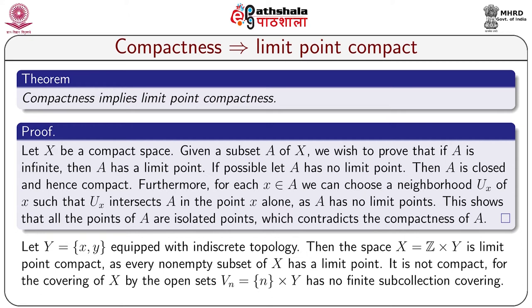For example, let Y be the two-point set {x, y} equipped with the indiscrete topology — meaning the topology contains only the empty set and the whole set. Consider the space X = Z × Y. Then X is limit point compact, as every non-empty subset of X has a limit point, but it is not compact because the covering by open sets V_n = {n} × Y has no finite sub-covering.